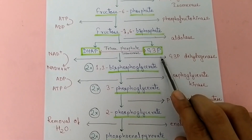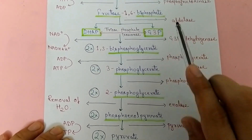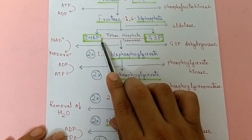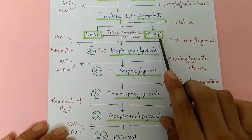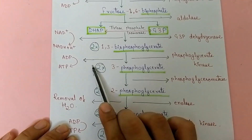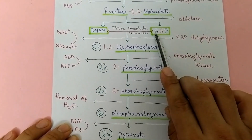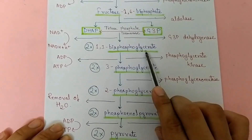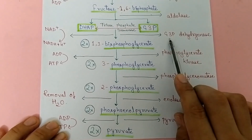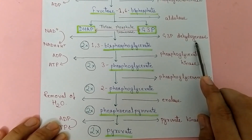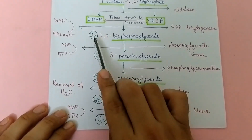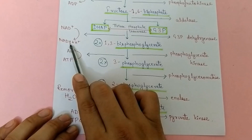Glyceraldehyde-3-phosphate will convert into 1,3-bisphosphoglycerate. We have 2 molecules of glyceraldehyde-3-phosphate because DHAP will isomerize into glyceraldehyde-3-phosphate with the help of enzyme triose phosphate isomerase, so all subsequent reactions take place twice. The conversion of glyceraldehyde-3-phosphate into 1,3-bisphosphoglycerate is done with the help of enzyme glyceraldehyde-3-phosphate dehydrogenase. Since this reaction takes place twice, we generate 2 NADH molecules.